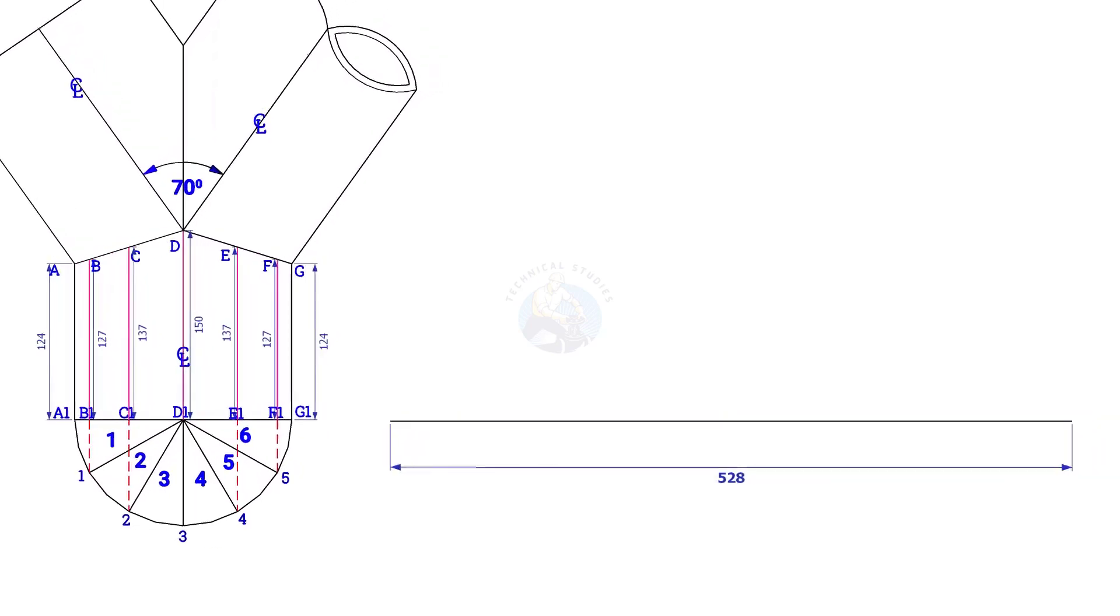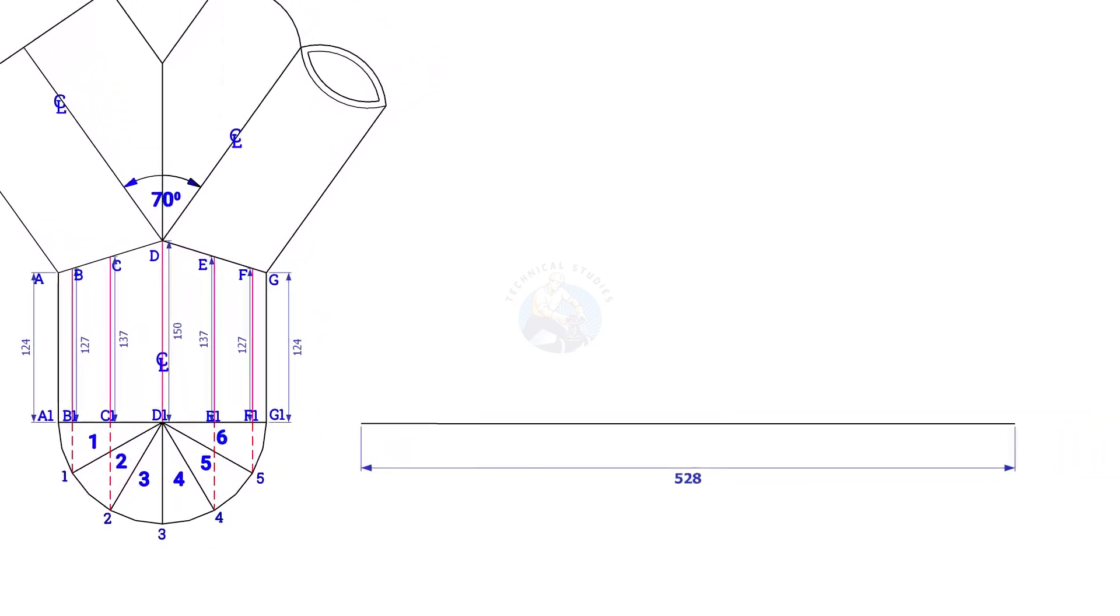Since we divided the half circle into six parts, divide the line into 12 equal parts. 528 divided by 12 is 44, so the length of each segment is 44 mm.